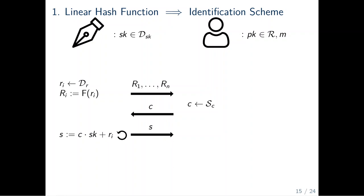At the end, the user checks whether there exists some i such that F of S_i equals C scalar multiplied by pk plus F of R_i. If this is true, the execution of the identification scheme is correct.